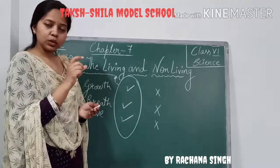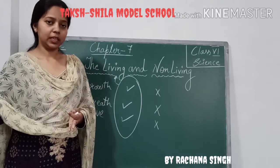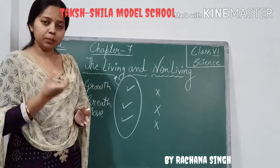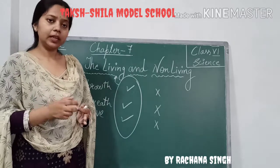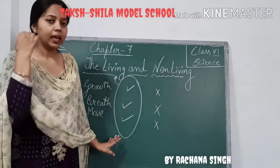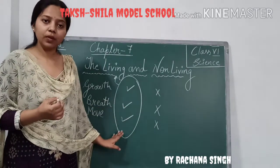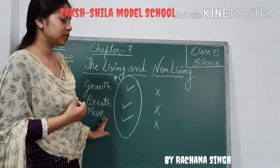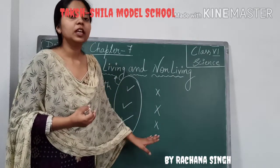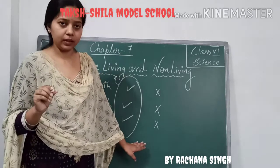A plant starts as a small seed, then becomes a tree — it grows. So it is also a living being. In this way, organisms that show these characteristics are called living beings, and those that do not show these characteristics are considered to be non-living.